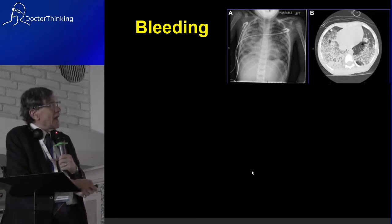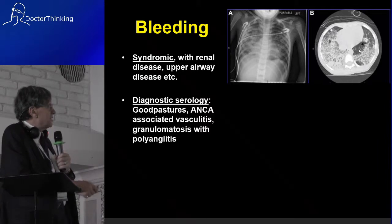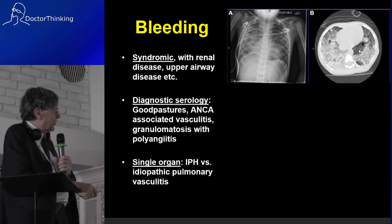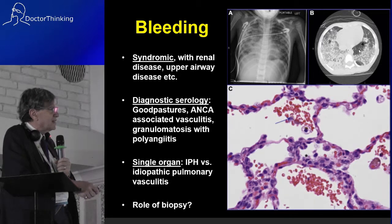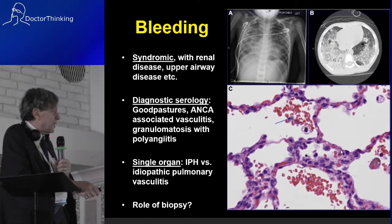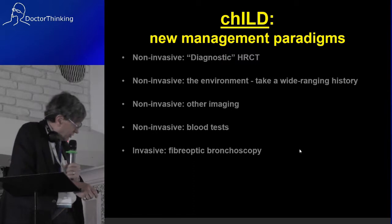What about alveolar hemorrhage? A typical CT scan and chest x-ray. It may be syndromic with renal disease or upper airway disease, and there may be diagnostic serology. Or it may be single organ disease, sometimes with just isolated pulmonary vasculitis — you can see the neutrophilic vasculitis on this biopsy. The role of biopsy in this condition is quite controversial.